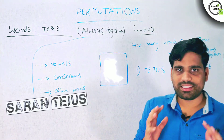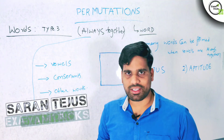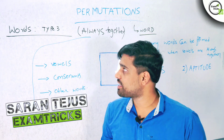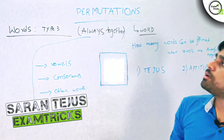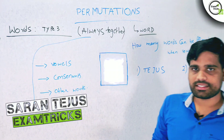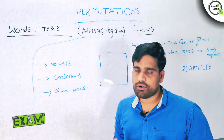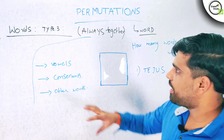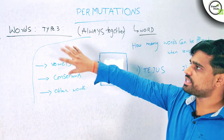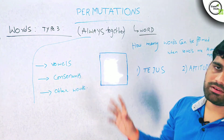Hi friends, my name is Tejas and you are on ExamTricks Channel. In this video, we will cover the 4th part of the Permutations. It is called Type 3.